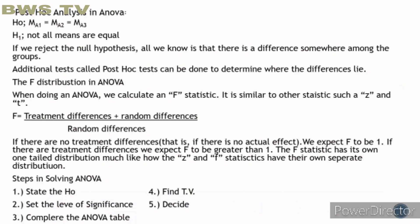Post hoc analysis in ANOVA. The null hypothesis is that all A levels are equal, and the alternative is that not all means are equal. If we reject the null hypothesis, all we know is that there is a difference somewhere among the groups. Additional tests called post hoc tests can be done to determine where the differences lie.